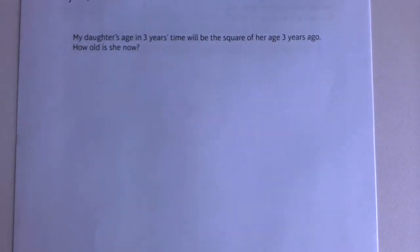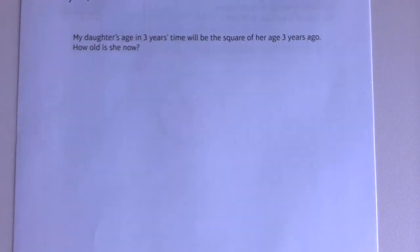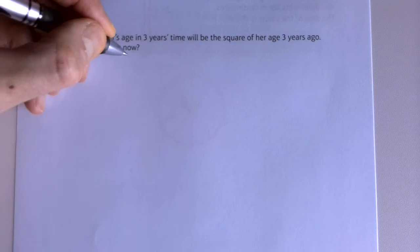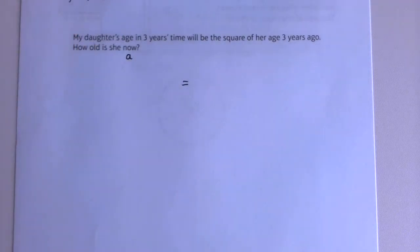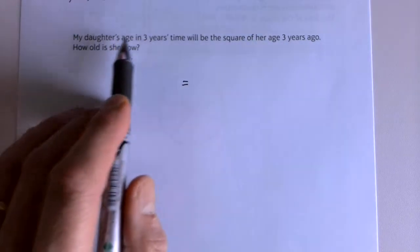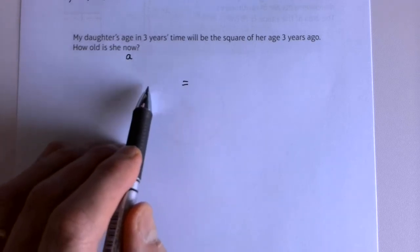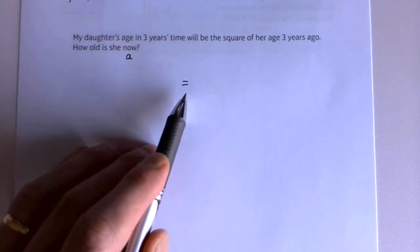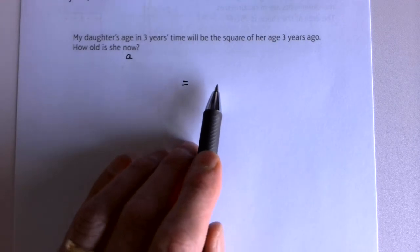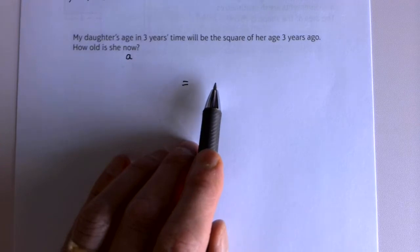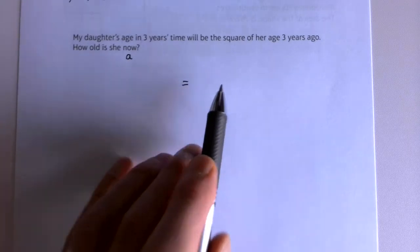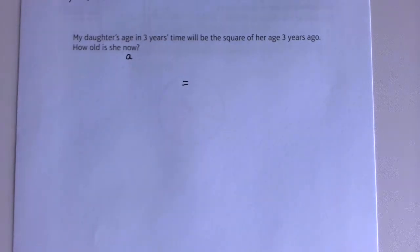My daughter's age in three years' time will be the square of her age three years ago. How old is she now? This is a problem with a value we don't know, so I'm going to give it a letter - I'll use 'a' for age. I'm going to try and write an equation for this sentence. If she's 'a' years old now, her age in three years' time is a + 3. Some of you will be scratching your heads - have a think about that, pause briefly, and I'll come back with my answer in just a second.